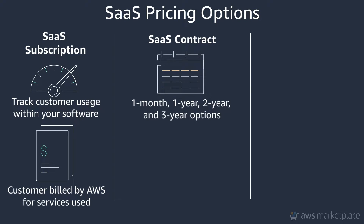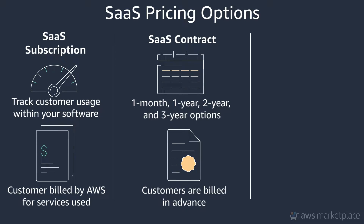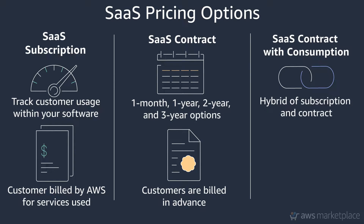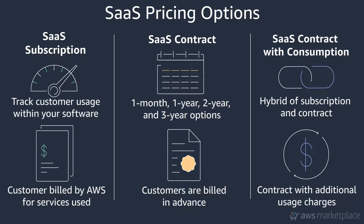SaaS Contracts: customers commit to an upfront payment for what they expect their usage to be for one-month, one-year, two-year, or three-year contract terms. Customers are billed in advance for the use of your software. SaaS Contract with Consumption is a hybrid of subscription and contract; this option allows AWS to charge customers a fixed amount and then report additional usage through metering API calls.